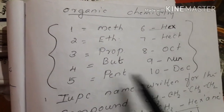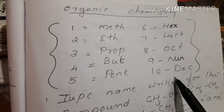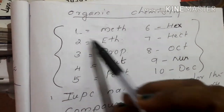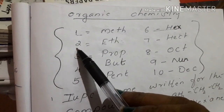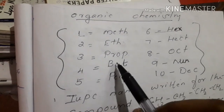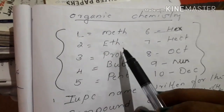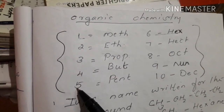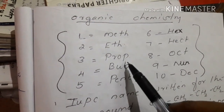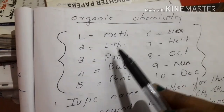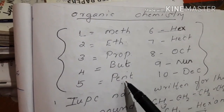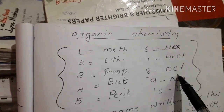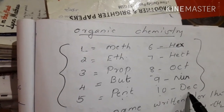It can be said that the name is hexane. We'll write it in the basic term. For 1 carbon atom, we call it methane. So: 1 = meth, 2 = eth, 3 = prop, 4 = but, 5 = pent, 6 = hex, 7 = hept, 8 = oct, 9 = non, 10 = dec.